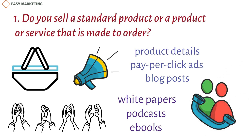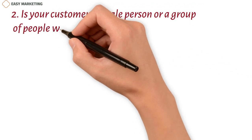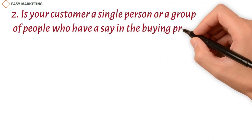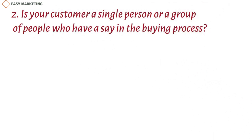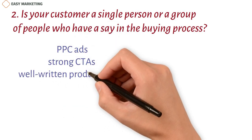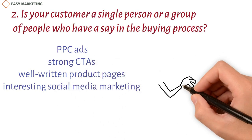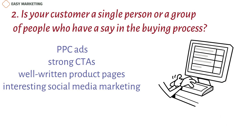Once a client gives their contact information, sales can reach out and ask how they can help. Is your customer a single person or a group of people who have a say in the buying process? You can connect with a single person through PPC ads, strong CTAs, well-written product pages, and interesting social media marketing. To sell to a committee, you'll need detailed marketing materials and a way to handle the lead nurturing process.